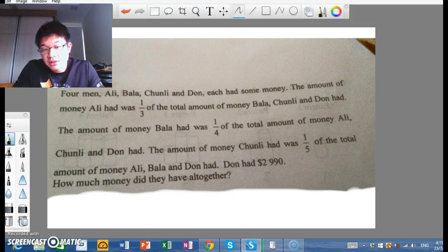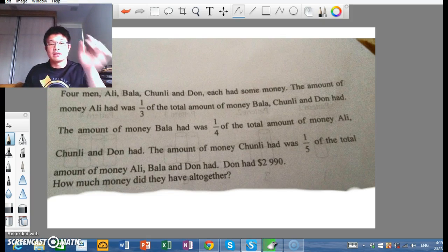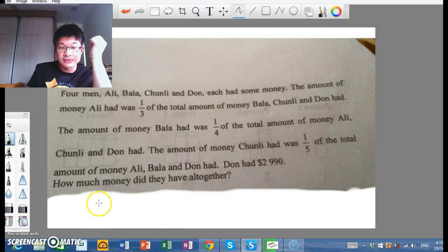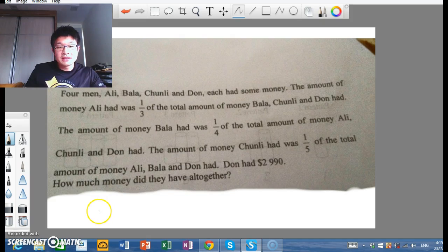The amount of money Chunli had was one-fifth the total amount of money Ali, Bala, and Don had. Finally, we know that Don had $2,990. So, how much money did they have altogether? Well, what we need to do is bear with the space today because the picture was pretty big. So four men, Ali, Bala, and Chunli each had some money.